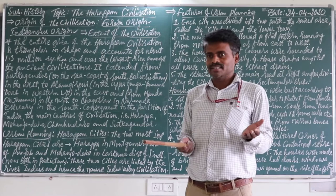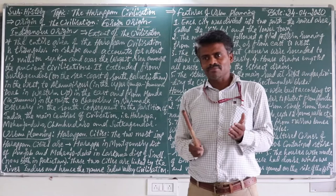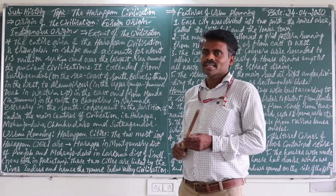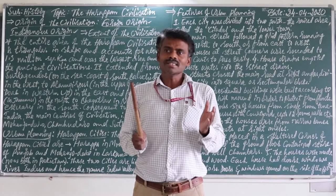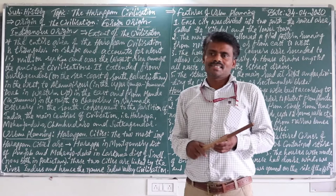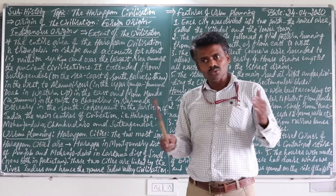The other type is indigenous origin. Indigenous origin means native — our local origin. Some historians say the civilization had a foreign source, while other historians say it was an indigenous origin, meaning native to our land.